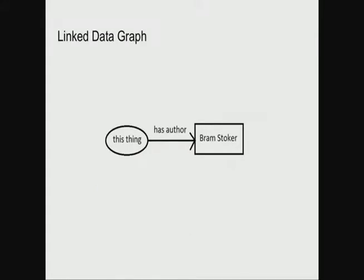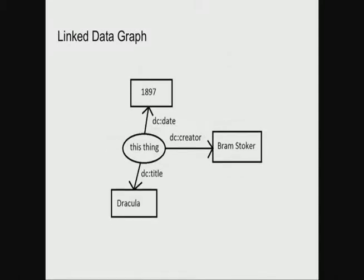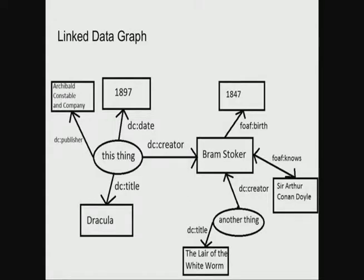Another way to think of linked data is through linked data graphs. We have the same information — subject, predicate, object — but not only do we know this thing has an author, we also know a lot of other metadata: the publishing date, the title. Not only do we know stuff about this thing, we know stuff about the author too — their birth date, people they may have worked with, other works they authored. As we add all this metadata, we're creating one big web of data all linked together.